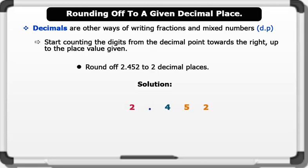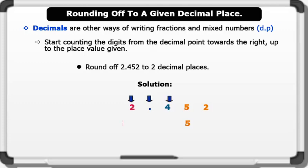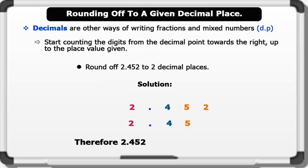Solution: to round off 2.452 to two decimal places, we identify the target by counting two places from the decimal point, which gives us 5. The digit after the target is 2, which is less than five, so we round down and keep the target the same. The digit after the target is ignored, and digits before the target are kept the same. Therefore, 2.452 rounded off to two decimal places gives us 2.45.